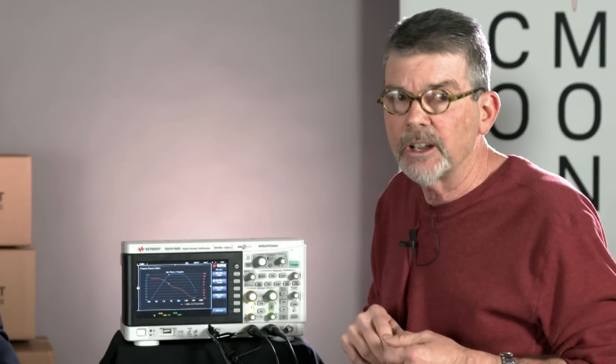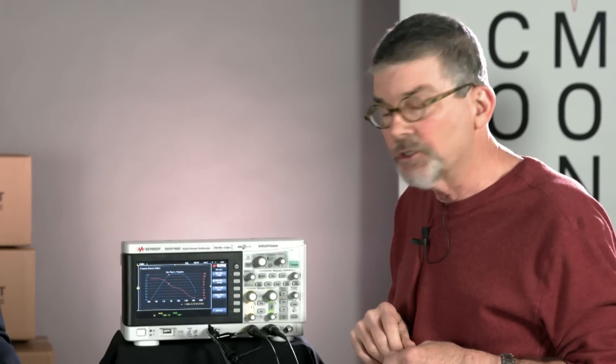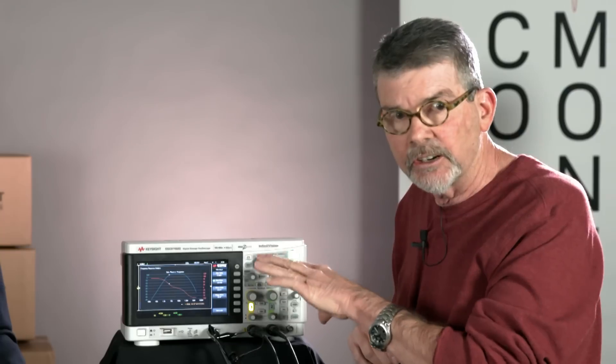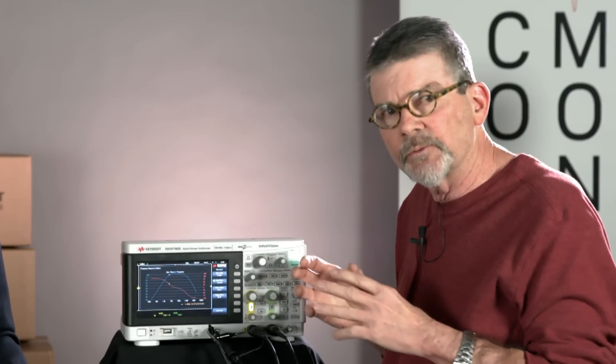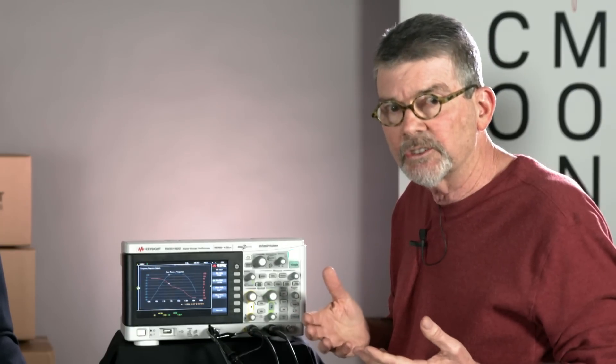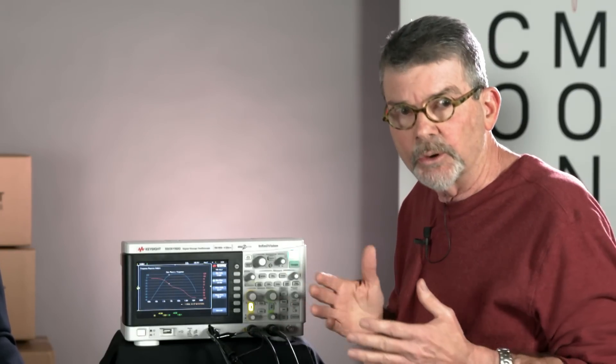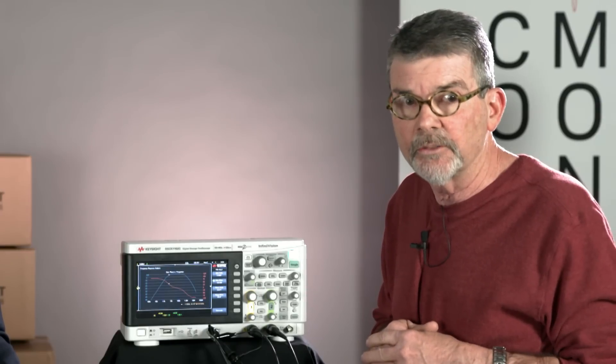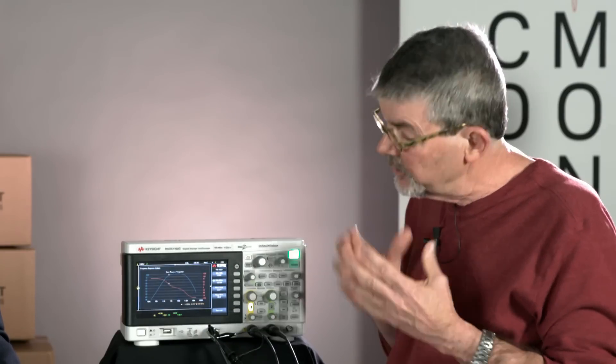They're called power supply rejection ratio and control loop response. It is a super set of this. This is kind of a subset. It has more features. You can do amplitude profiling. You can select more points per decade for your test run. You can also get a tabular view of the results. This, you only get the plot view, which is pretty darn good for what you're paying for this particular product.